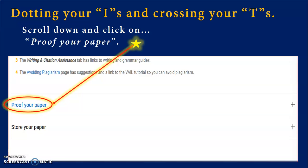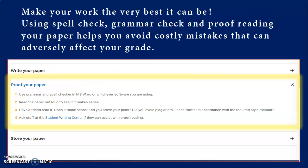Dotting your I's and crossing your T's. Scroll down and click on Proof Your Paper. Make your work the very best it can be. Using spell check, grammar check, and proofreading your paper helps you avoid costly mistakes that can adversely affect your grade.